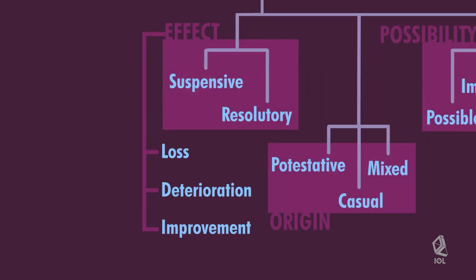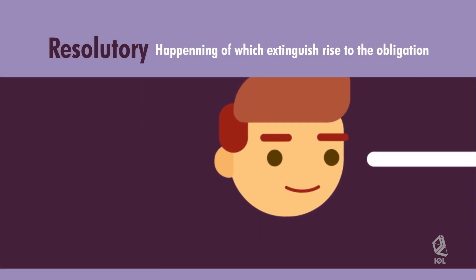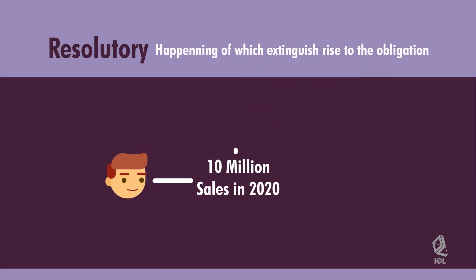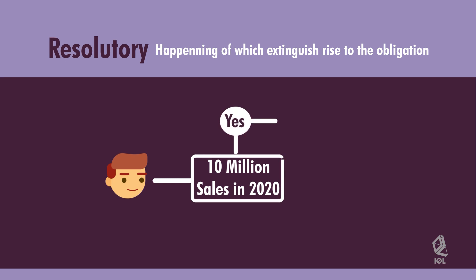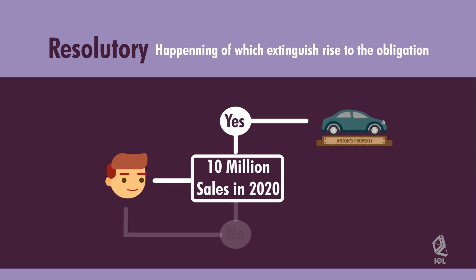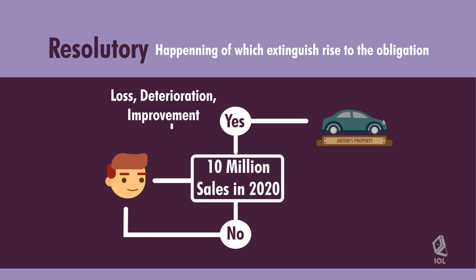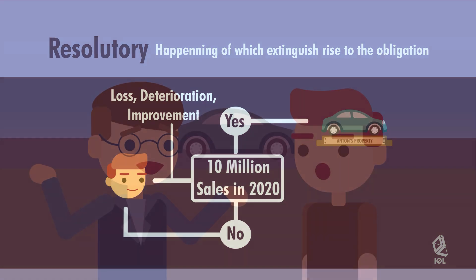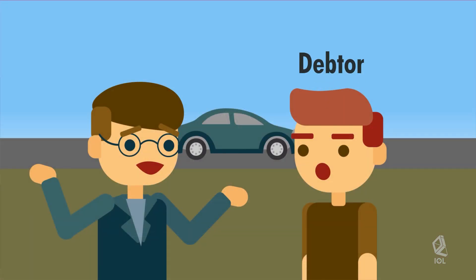In the case of obligations subject to resolutory conditions, for example, Antin agreed that Henry shall use Antin's car until Henry is able to reach 10 million pesos in sales. Upon reaching the 10 million pesos sales, Henry has the obligation to return the car to Antin. What happens if there is loss, deterioration, or improvement before the happening of the condition? The same rules that we have mentioned a while ago shall be followed, only that in this case, Henry becomes the debtor who is bound to return the car and Antin becomes the creditor who has the right to demand the return of the car.